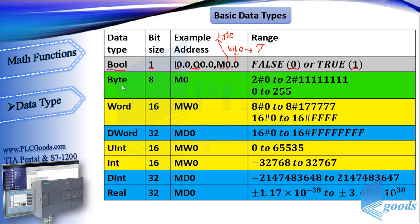Then we have byte. It includes 8 bits — we just write the byte number to refer to a byte, such as M0. With 8 bits we can store 8 zeros to 8 ones at a byte address. These can be used to represent numbers 0 to 255.